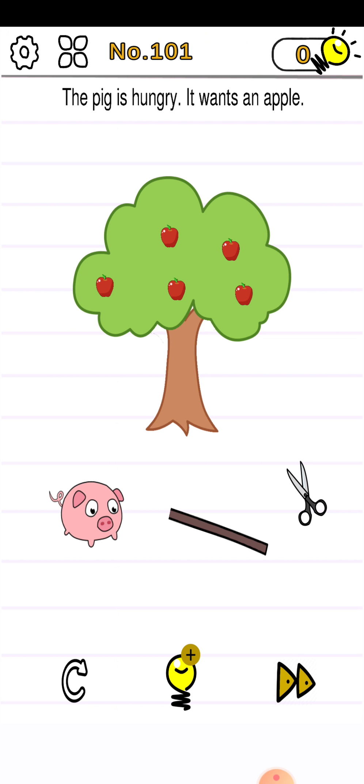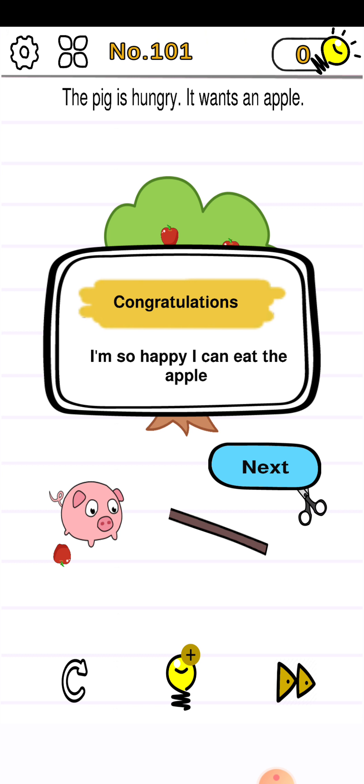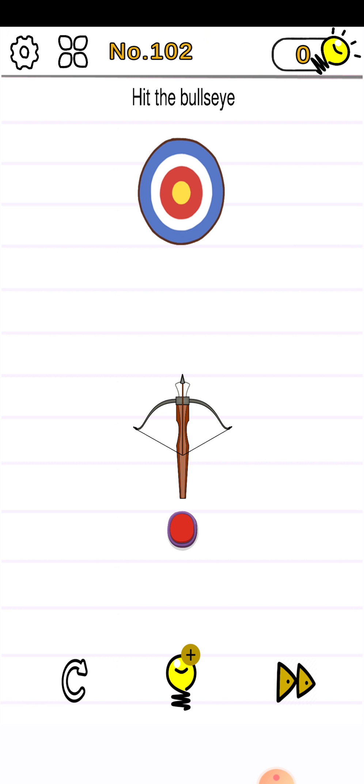So what you need to do is just shake your phone for two to three seconds and the apple will fall down. Let's proceed to the next level. Hit the bullseye. So when you press on the red button, the arrow does not hit the bullseye.